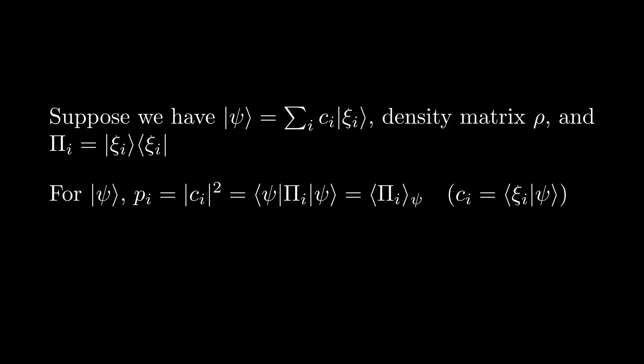Alternatively, we can also define p_i as the expectation value of Pi_i with respect to psi. Consequently, for density matrices, we equivalently have that p_i is defined as the trace of rho times Pi_i, since this is just the expectation value for density matrices. While we have discussed measurements entirely in the context of orthogonal projections up to this point, we can observe that we actually do not need to apply an orthogonal measurement directly to a given system in order to measure it.